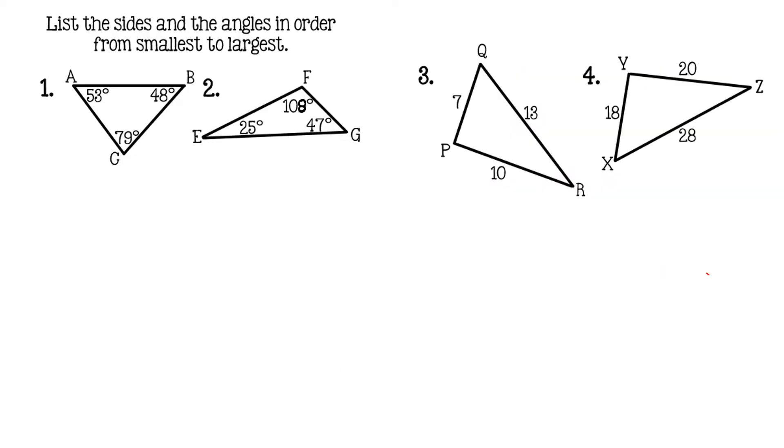Let's look at some applications of this theorem. So we'll start with problem one, triangle ABC. The directions say to list the sides and the angles in order from smallest to largest. So I like to list my angles according to their measures. So I'm going to start with the angle that has the smallest measure. So that one's 48 degrees.